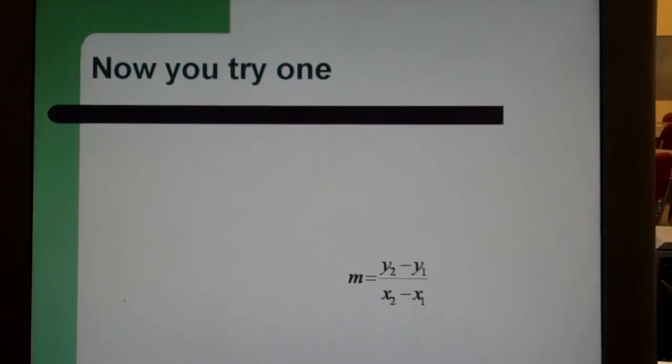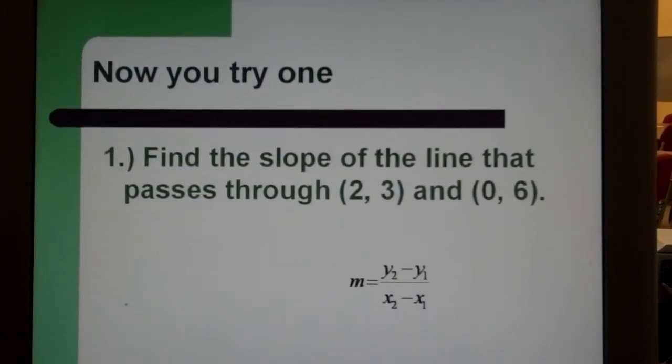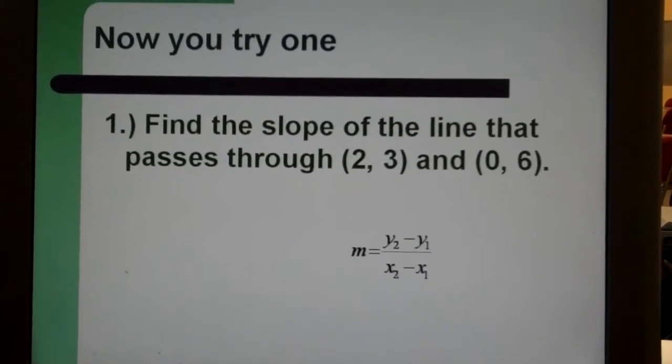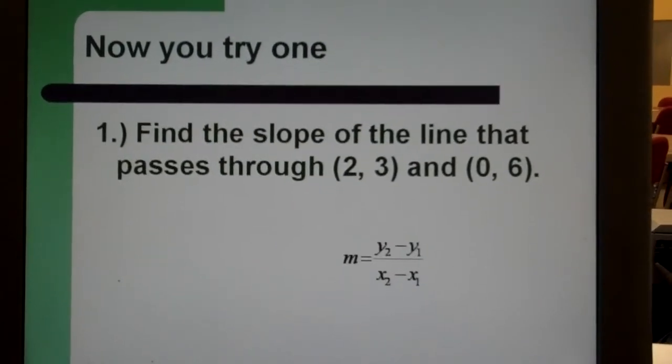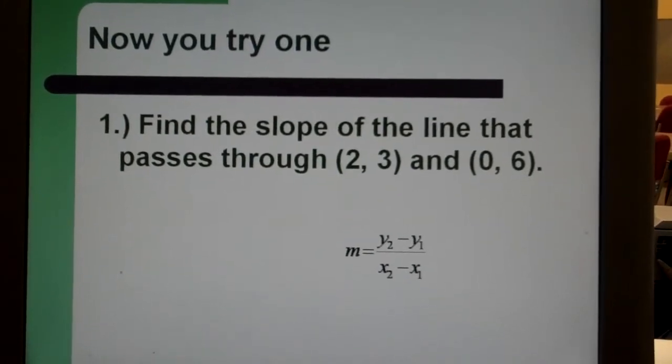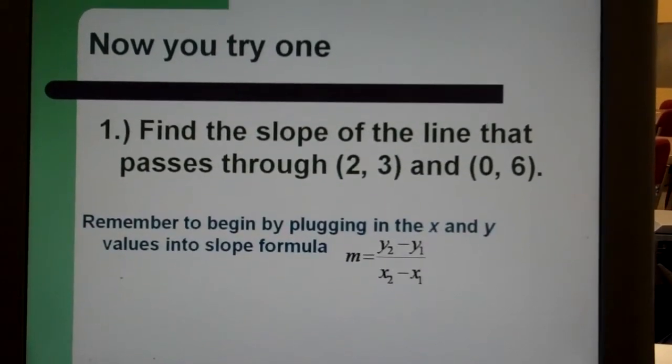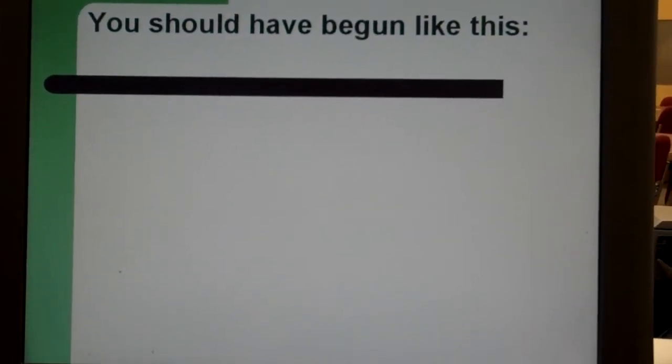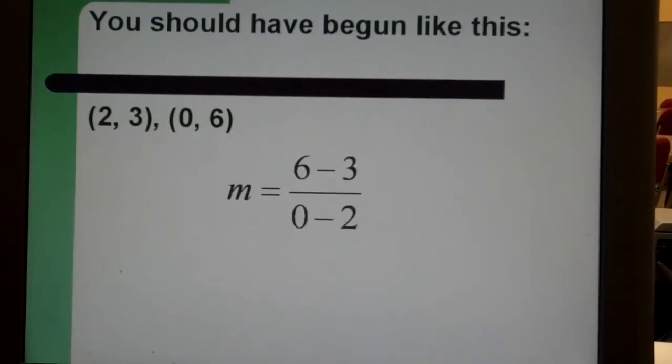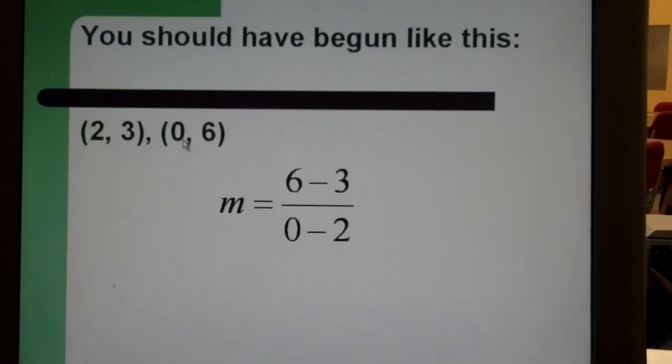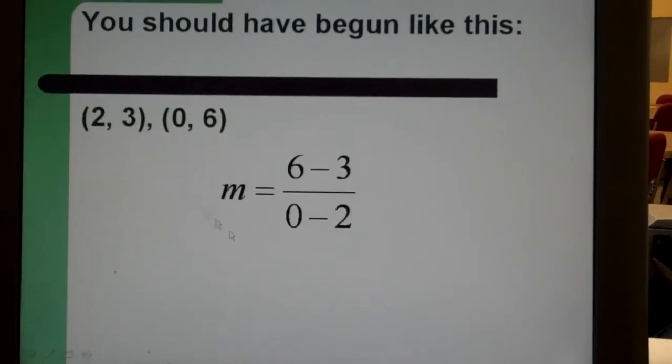Now you try one. Find the slope of the line that passes through two comma three and zero comma six. Just pause this here and try and set it up yourself. So this is how we should have begun. Two comma three, zero comma six. So Y two minus Y one, six minus three over X two minus X one, zero minus two.